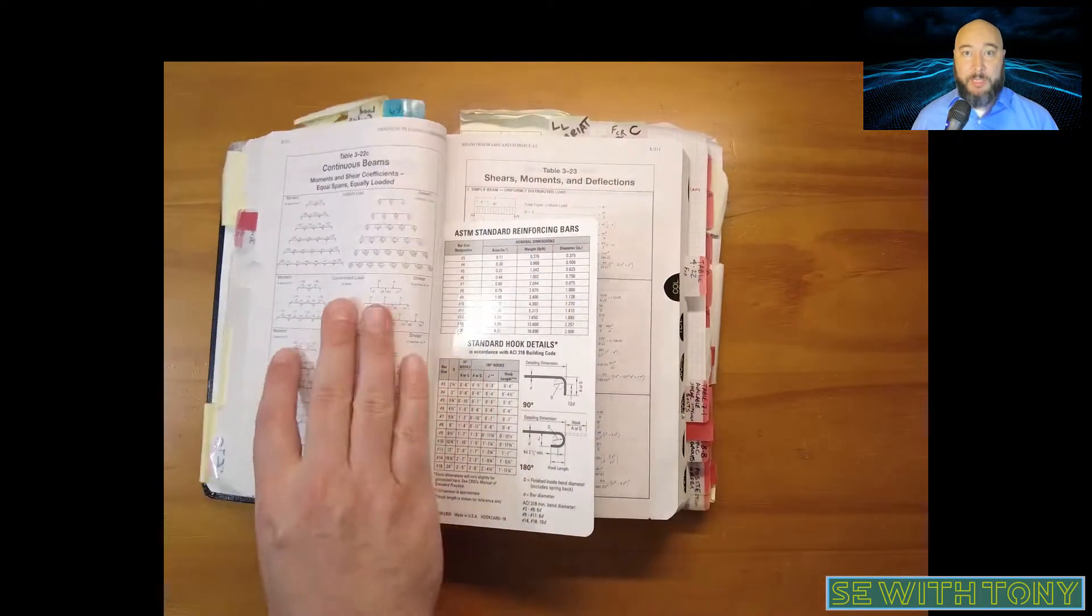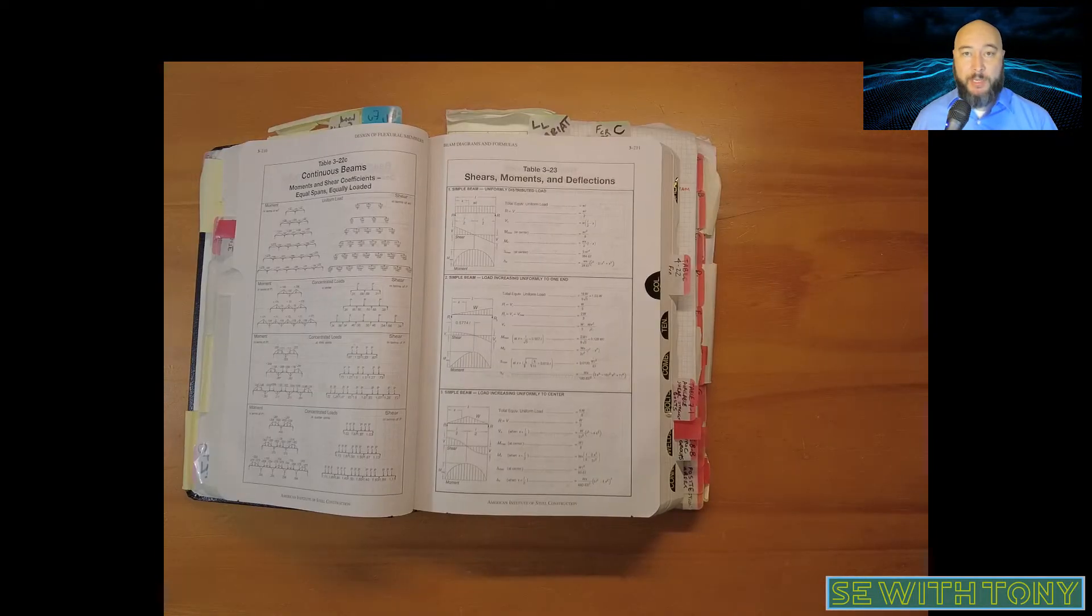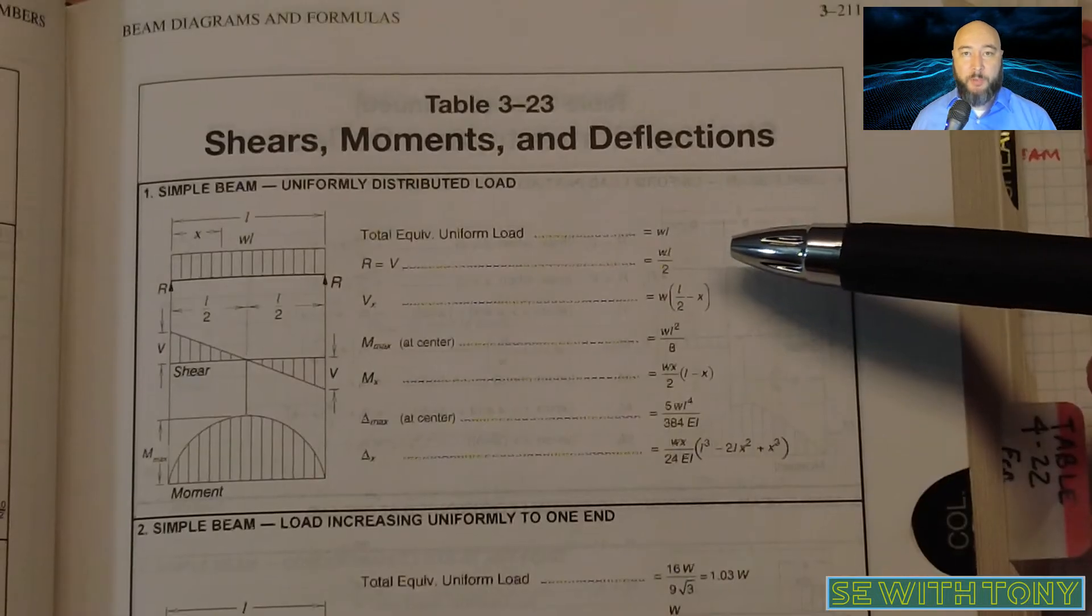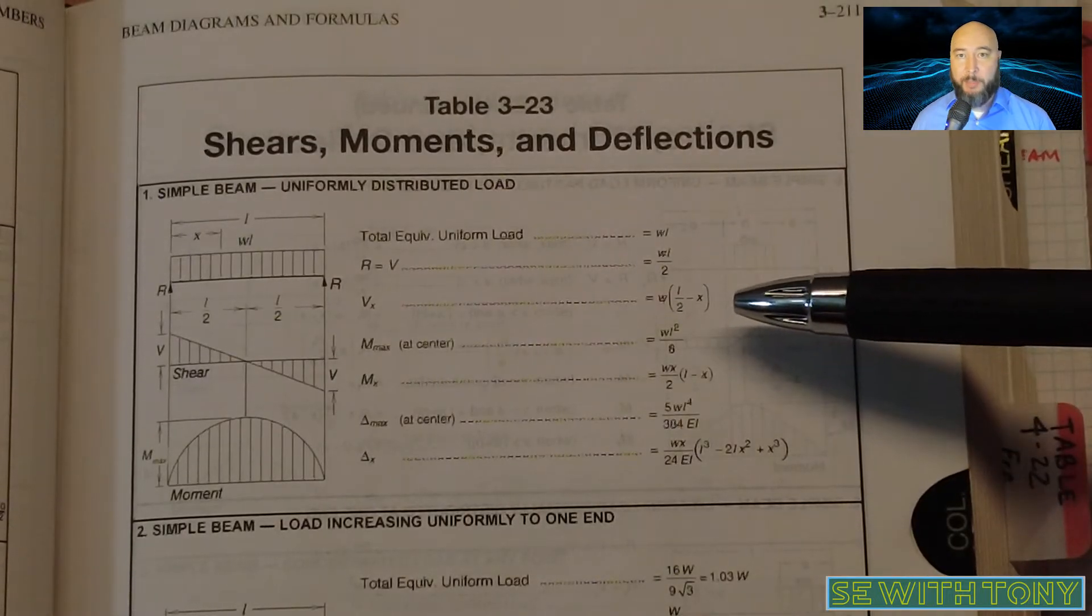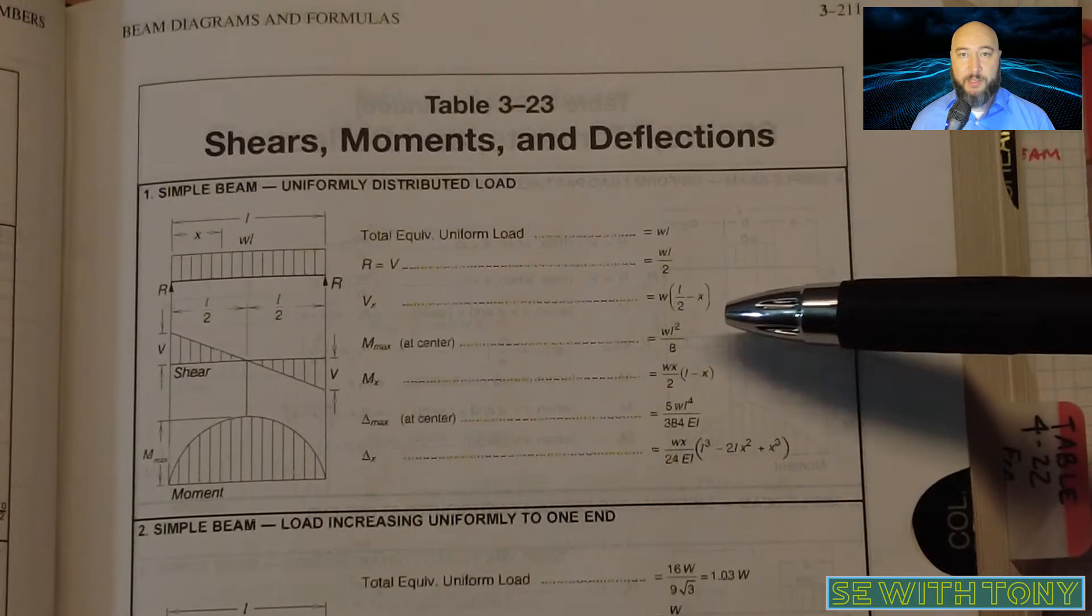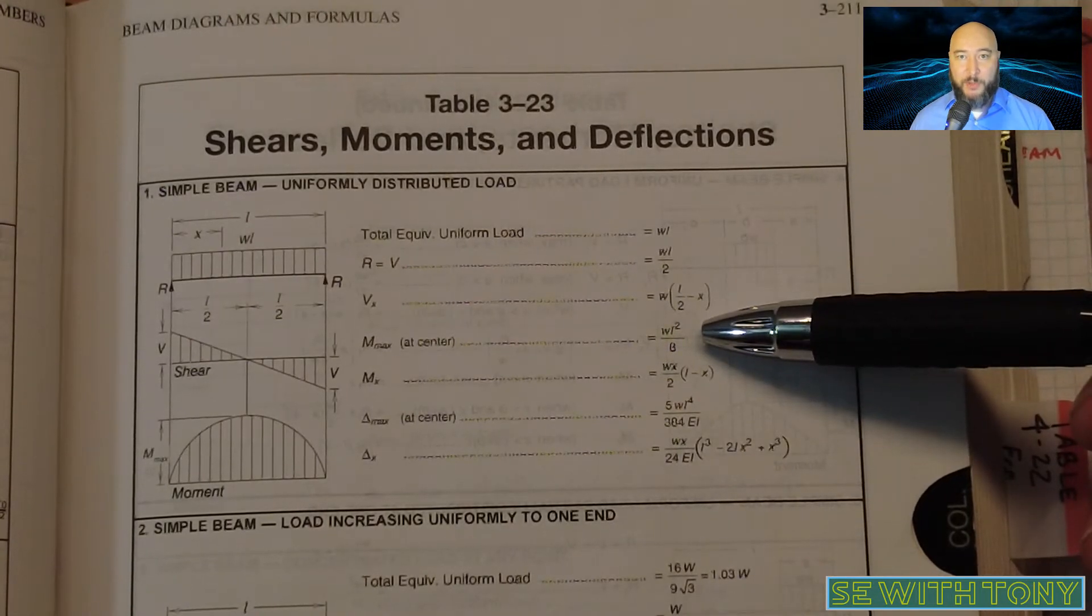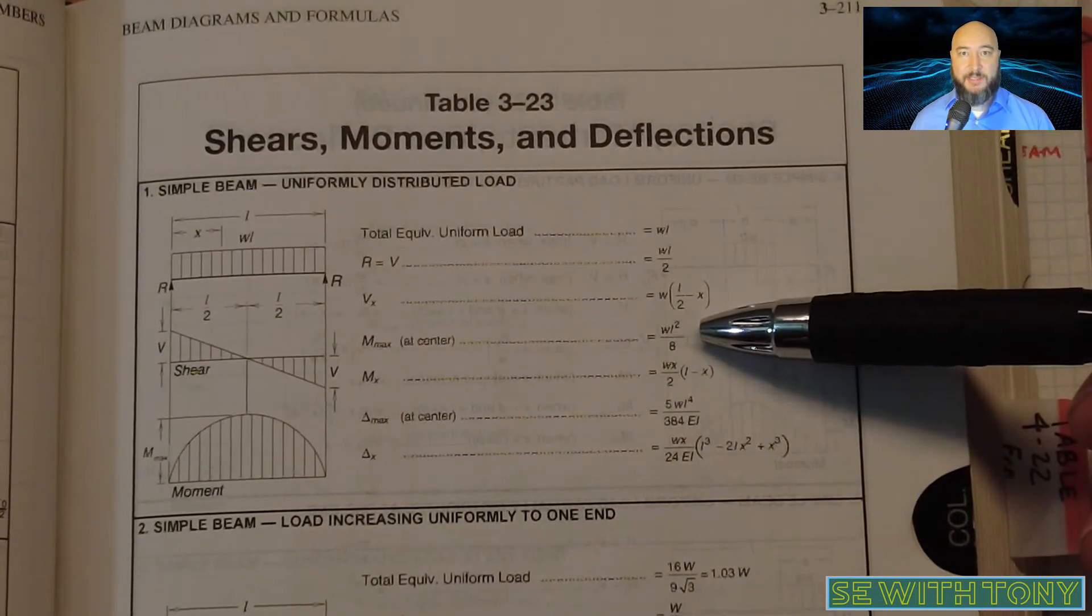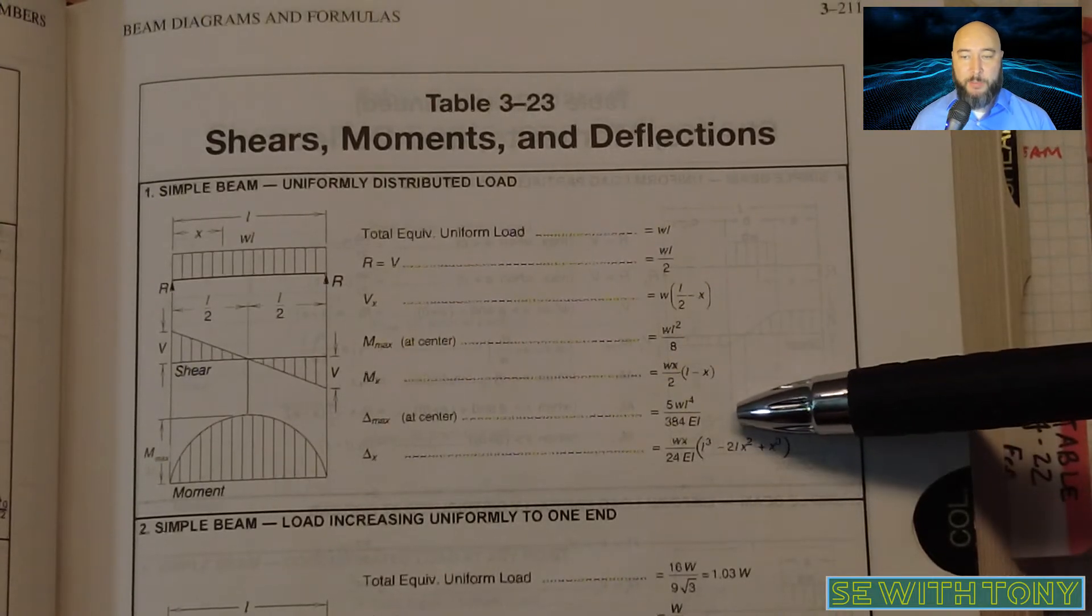The analysis formulas for beam reaction, shear, moment, and deflection are published in multiple places. I know I have them in my engineering mechanics textbook, mechanics of materials textbook. I reach to my bookshelf, I grab the closest reference I had, it was the AISC steel manual, and those numbers are all published here.